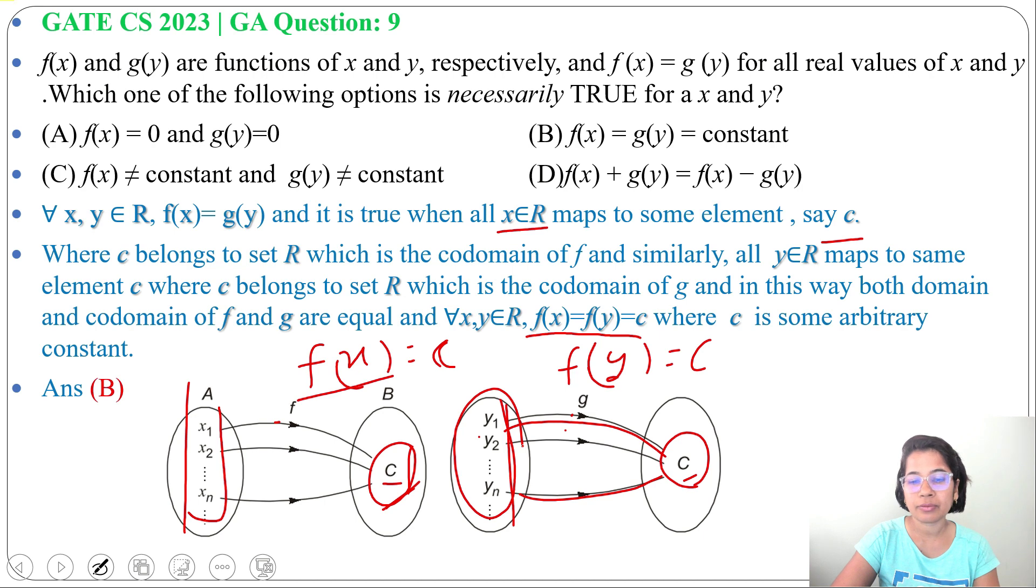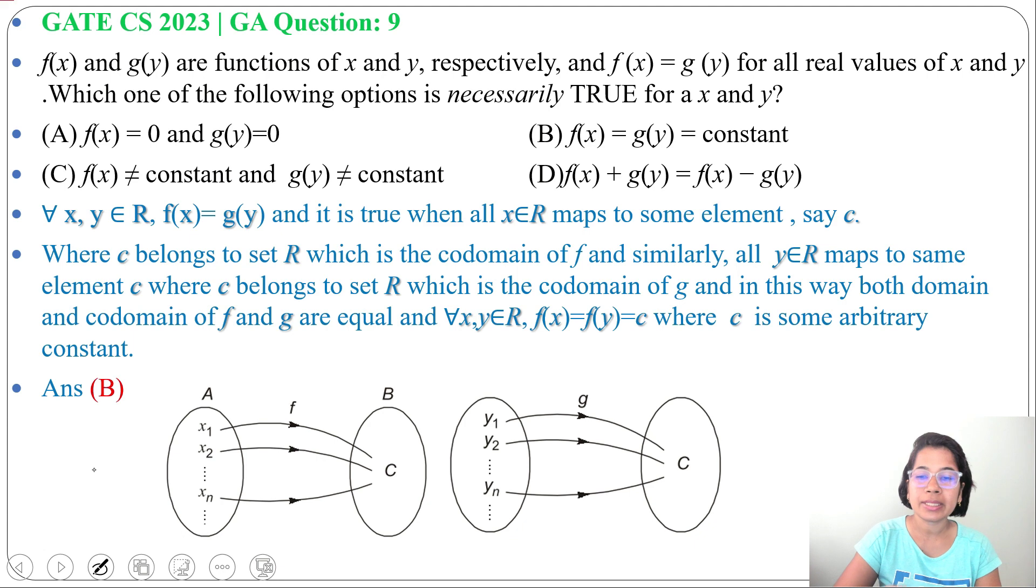That's why you can say for all x, y belongs to R, f(x) equals g(y) equals c where c is some arbitrary constant. Now check the option. In option B it's present f(x) equals g(y) equals some constant. Then you can say f(x) equals g(y). Answer is option B.